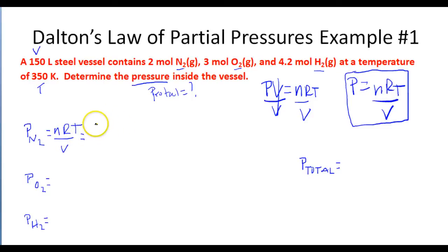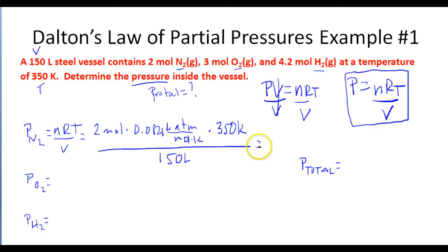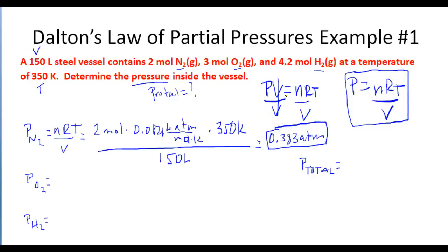For the pressure of nitrogen, we take N times R times T divided by V: 2 moles times 0.0821 L·atm/(mol·K) times 350 K, divided by 150 liters. Putting this in the calculator, we end up with 0.383 atmospheres. So the pressure that the nitrogen gas is exerting in this vessel is 0.383 atmospheres.